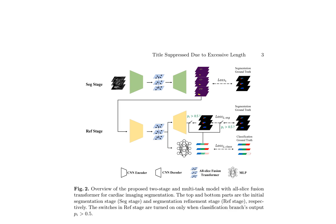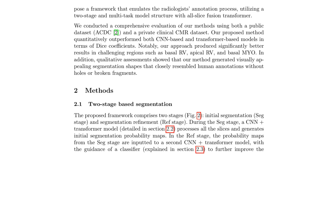The framework was evaluated on both the public ACDC dataset and a private clinical CMR dataset, demonstrating superior performance compared to CNN-based and transformer-based models. Quantitative results showed improved DICE coefficients, particularly in challenging regions such as basal RV, apical RV, and basal MYO. Qualitative assessments revealed visually appealing segmentation shapes closely resembling human annotations, without holes or broken fragments. The multitask model integrates both segmentation and classification tasks, leveraging the strengths of both CNNs and transformers in processing spatial and sequential data.